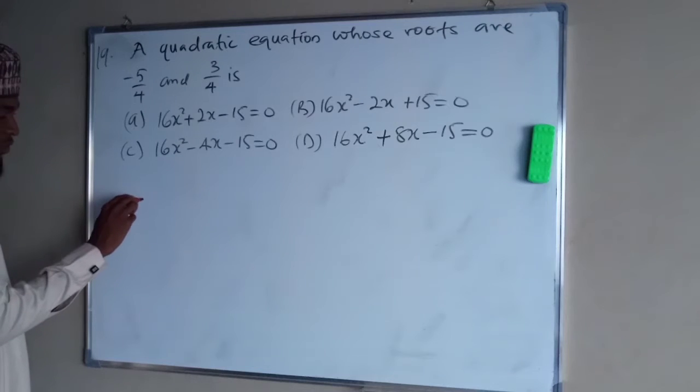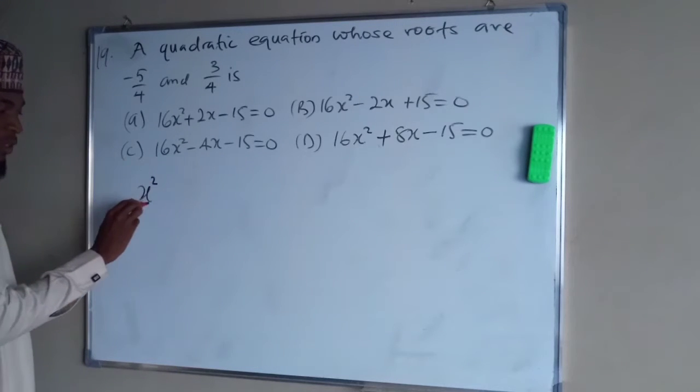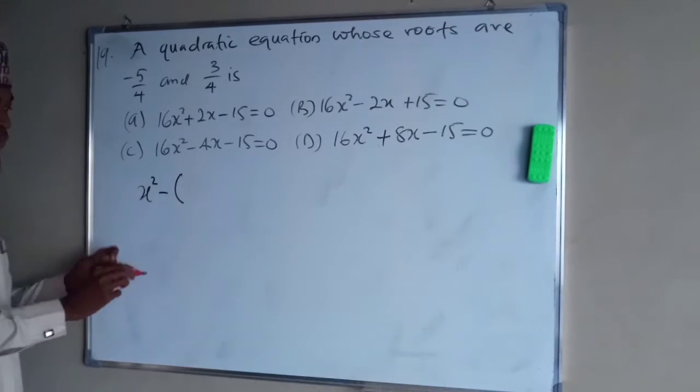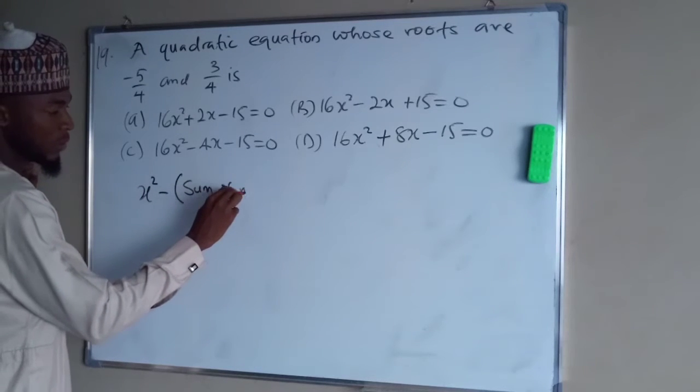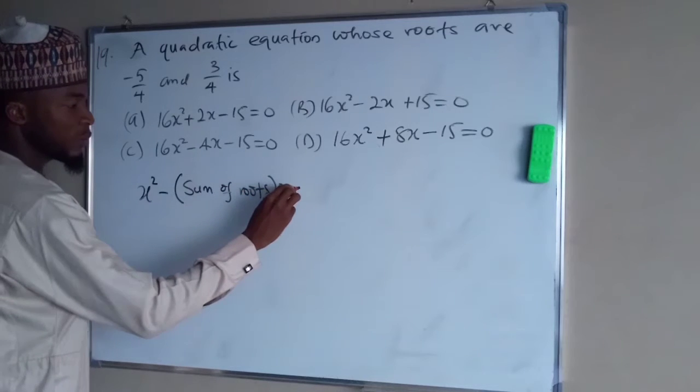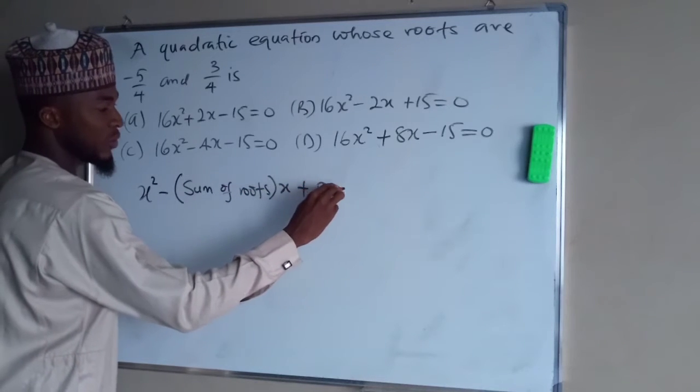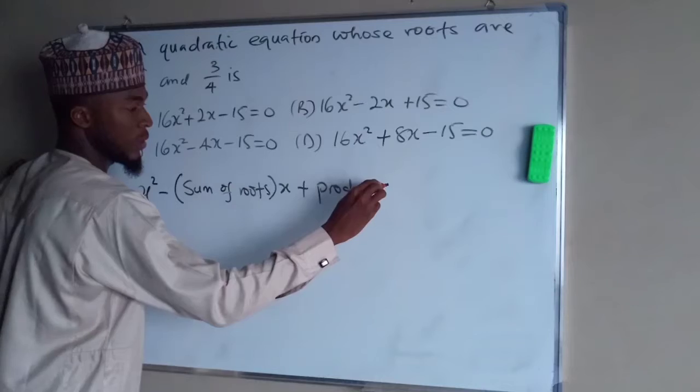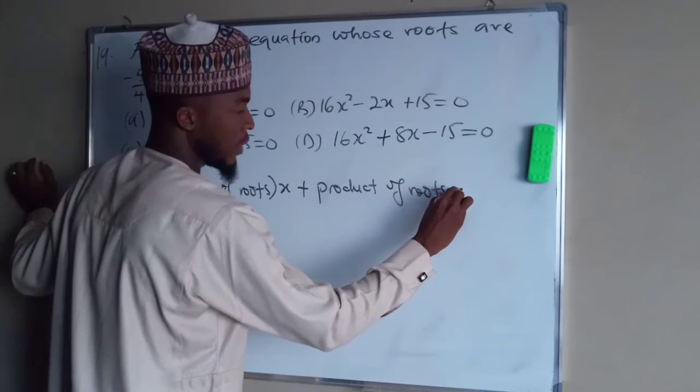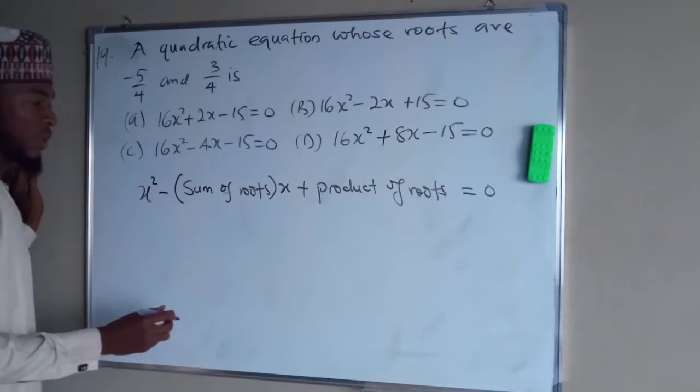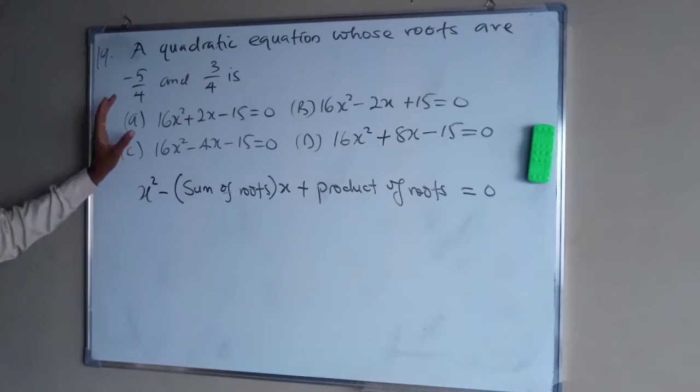The best way to do that is to say x squared minus sum of roots multiplied by x plus product of roots equals 0. Using this formula, it will guide you on how to find a quadratic equation whose roots are given.